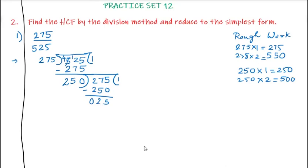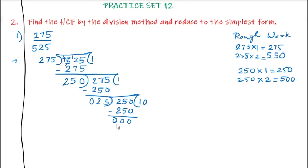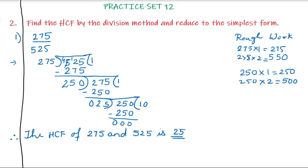We consider 25 as the new divisor, and the previous outside number 250 goes inside as the new dividend. Now, 25 how many times gives 250? 25 tens are 250. So we write 25 tens are 250, subtract, and get remainder 0. That means the division is complete. The previous divisor was 25, so the HCF of 275 and 525 is 25.